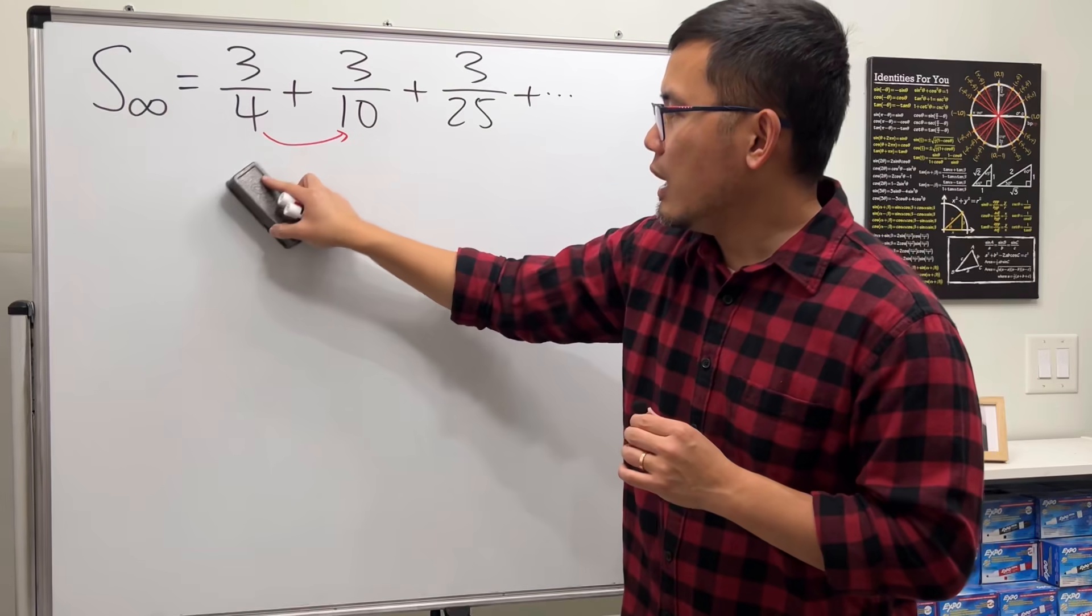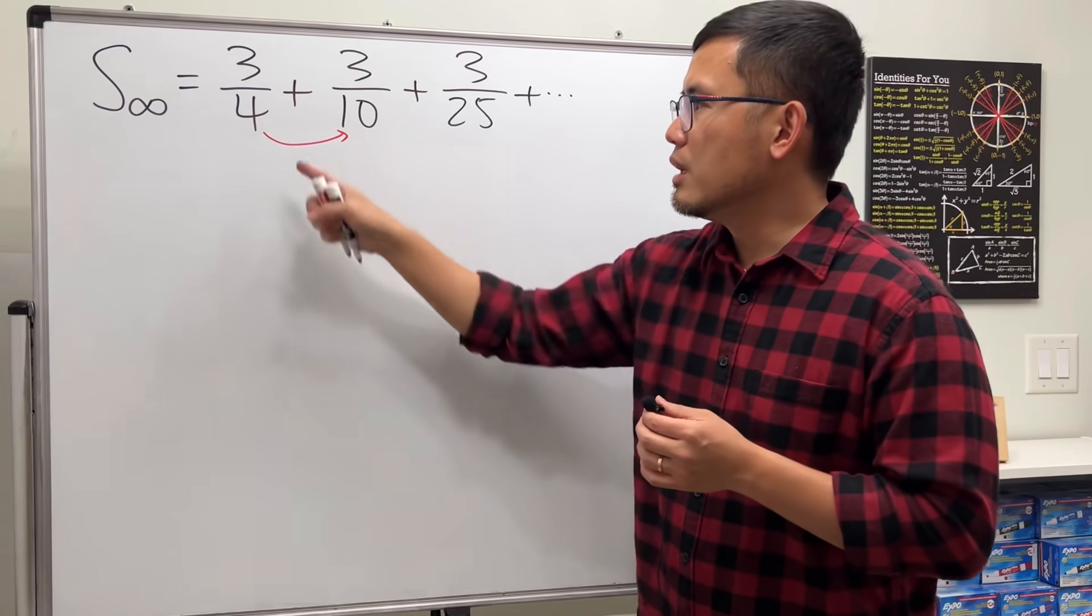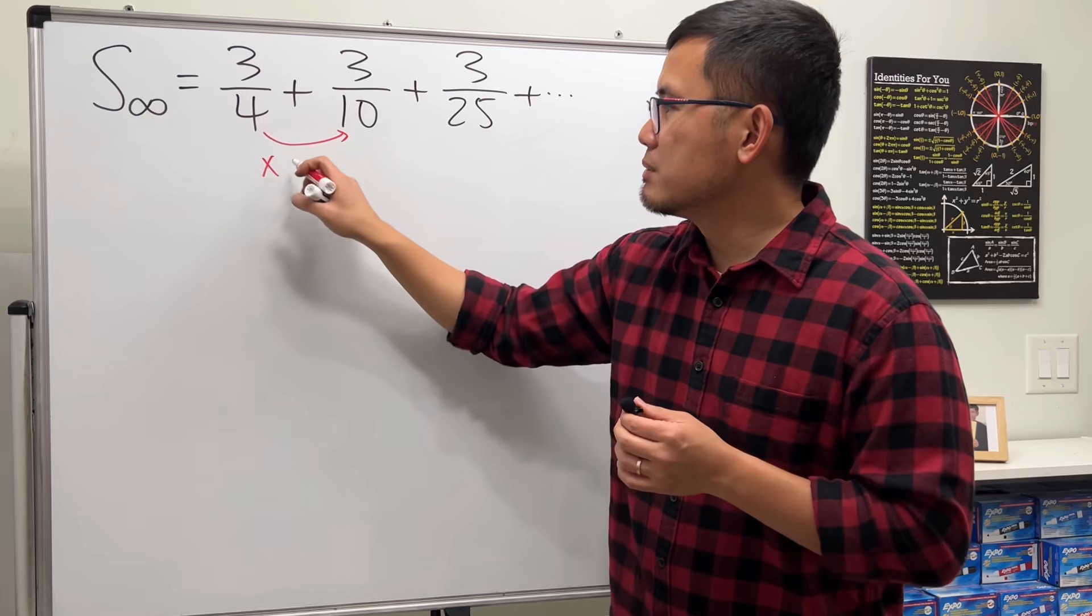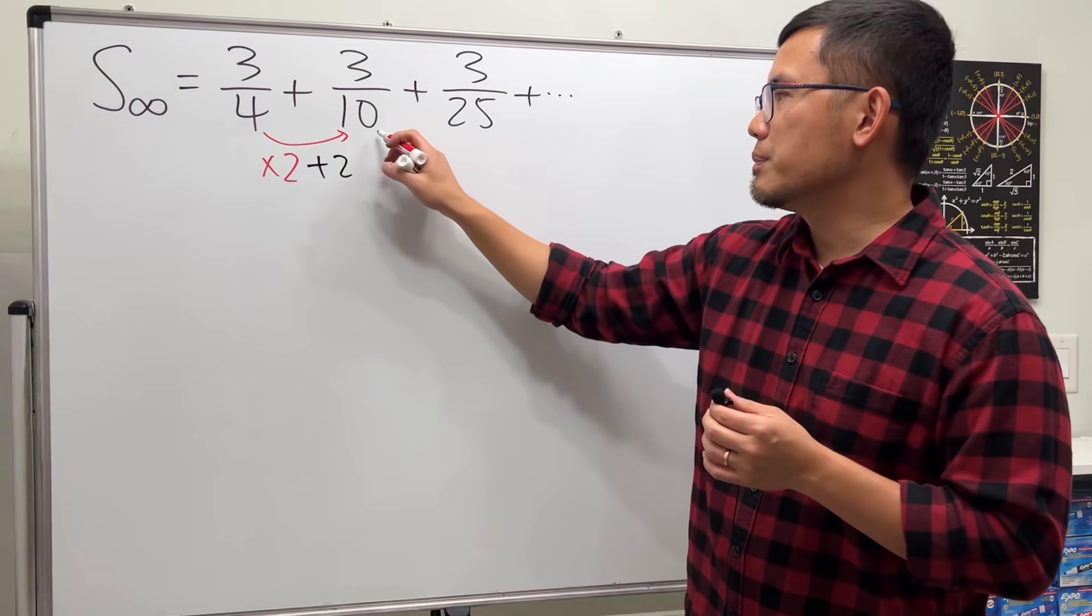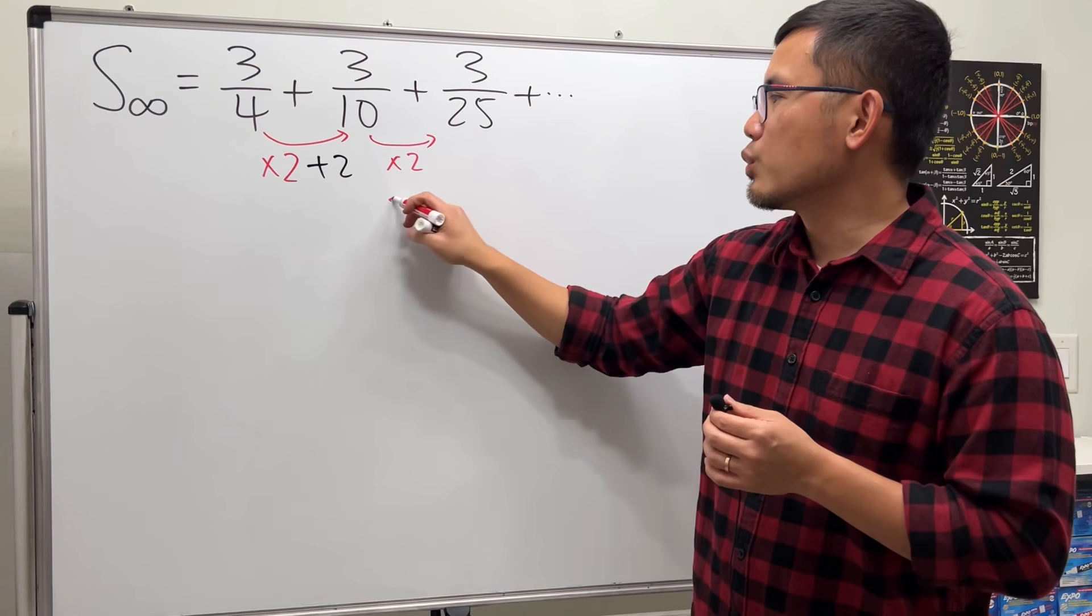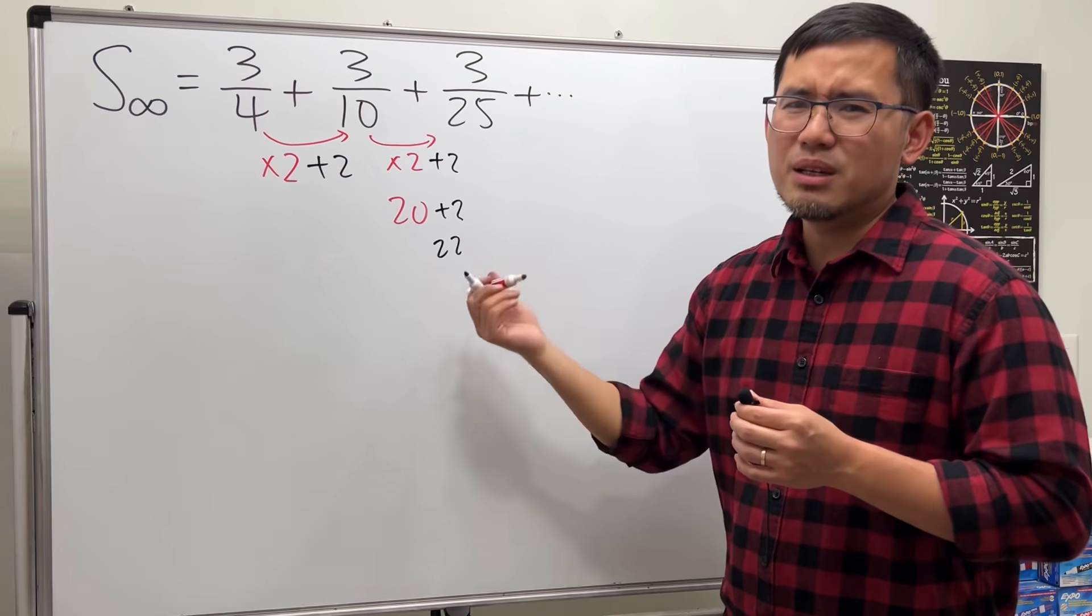So how else can we go from 4 to 10? I got creative a little bit. Maybe we can multiply this by 2 and add 2 to it. Yeah, but that doesn't work because 10 times 2 is 20, and then plus 2 you get 22. That's not 25. I'm close.